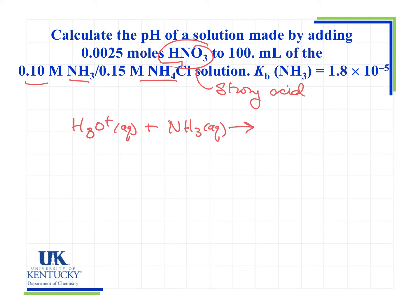When we swap the H⁺ from the acid to the base, that turns the base NH3 into NH4⁺ and turns the acid into H2O. With a one-way reaction, I use an ICF table — we go to completion, not to equilibrium. It's a way of doing limiting reactant problems, and I put moles into my table.